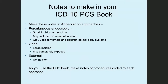There's no way to remember all the guidelines in the PCS book. Here are some suggestions to write in your book to jog your memory: percutaneous endoscopic is a small incision and may include an extension of incision or another small incision; value F is used only for female reproductive and gastrointestinal body parts; open is a large incision; external is no incision. As you use the PCS book, make notes of the procedures coded to each approach in your appendix — make it your go-to place.